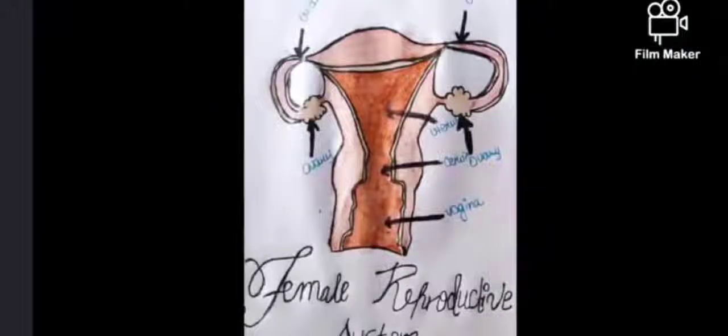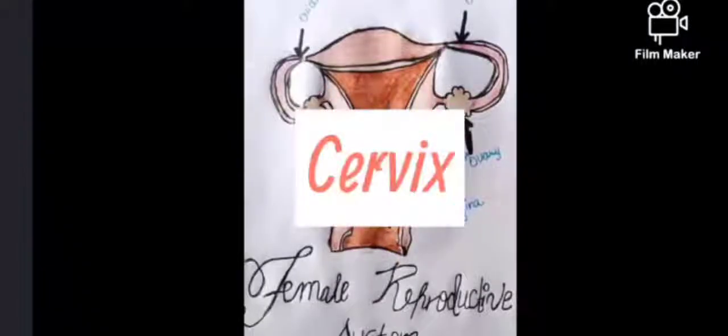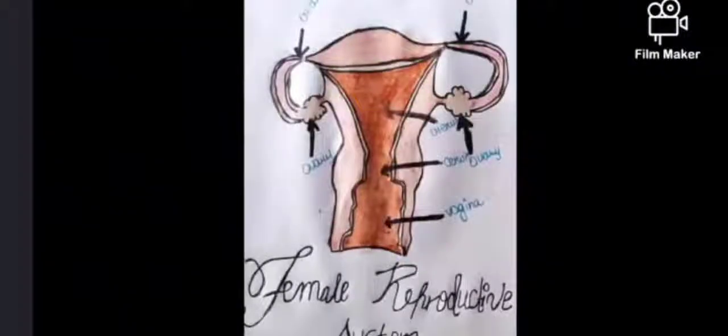The cervix is the lower and narrower portion of the uterus which opens into the vagina. Muscles of the cervix control the opening and closing of the uterus.